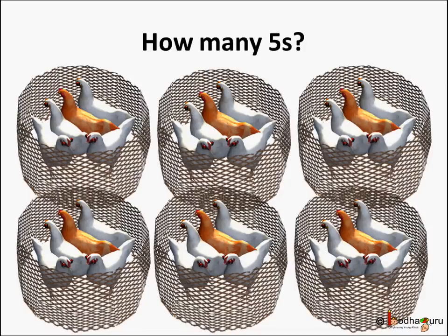We do multiplication when we need to add a number many times. Like, we have 5 hands in a basket and there are 6 such baskets. How many total number of hands? We need to add 5 hands per basket 6 times, and that is where we use multiplication. So the total number of hands is 6 multiplied by 5. 6 multiplied by 5 means adding 5s 6 times.